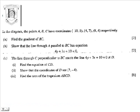In the diagram the points A, B and C have the coordinates (10, 5), (4, 7) and (8, 4).